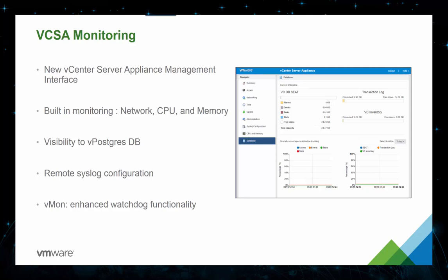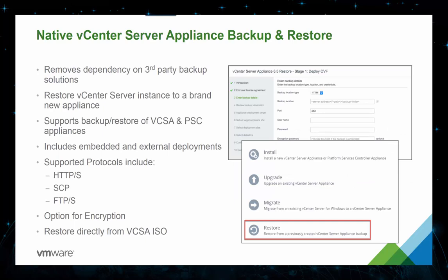Under the hood, we see significant improvements in watchdog services with a new service lifecycle framework called Vmon. Vmon unifies the previous five watchdog services in vCenter Server 6.0 into a single source of truth to simplify managing and monitoring vCenter Server services. Vmon also helps track service dependencies, which can become quite complex. Features such as vCenter HA will take advantage of Vmon to help make decisions as to when to fail over to another node.